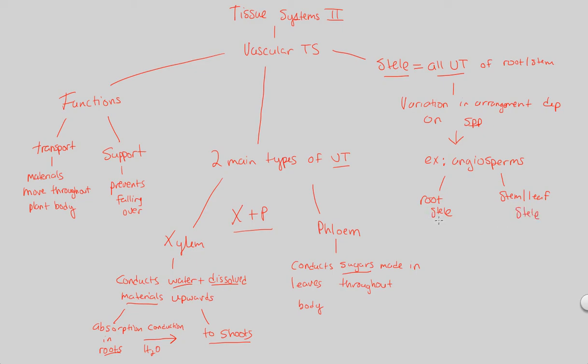The root steel is going to be generally, in angiosperms, a solid central cylinder. So it's a solid central cylinder with X plus P. What does that stand for? Xylem and phloem. So it's a central cylinder in the root.